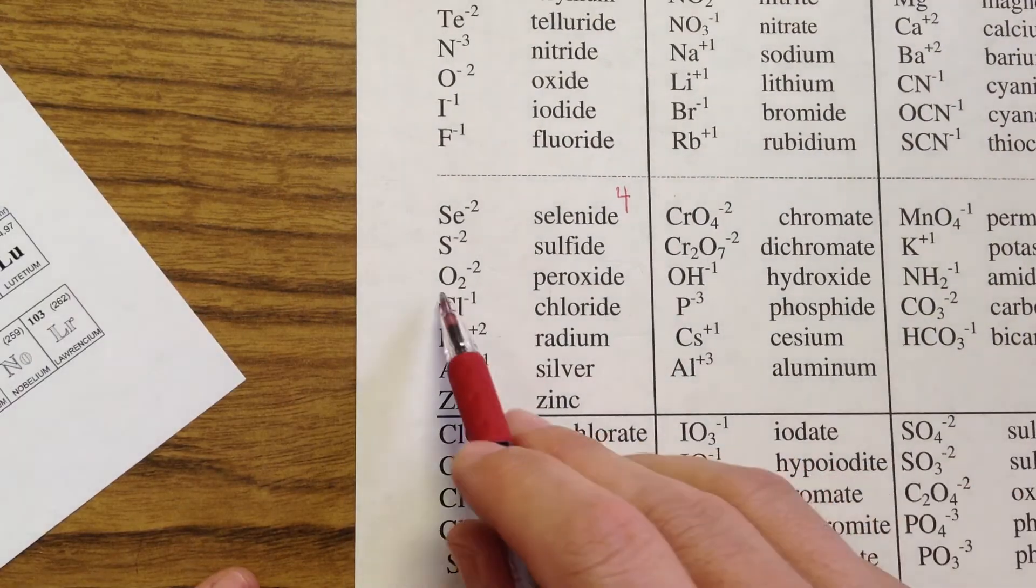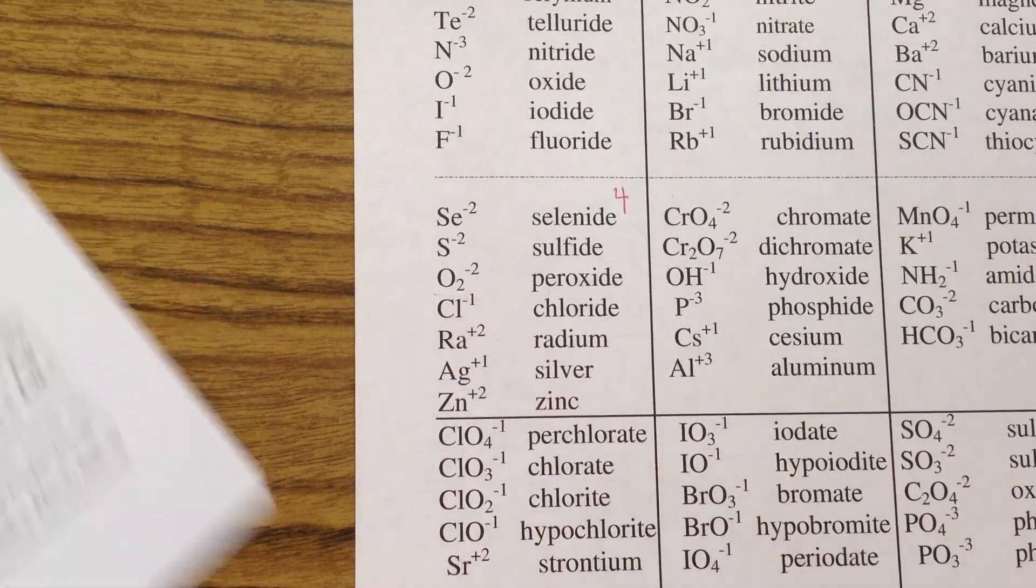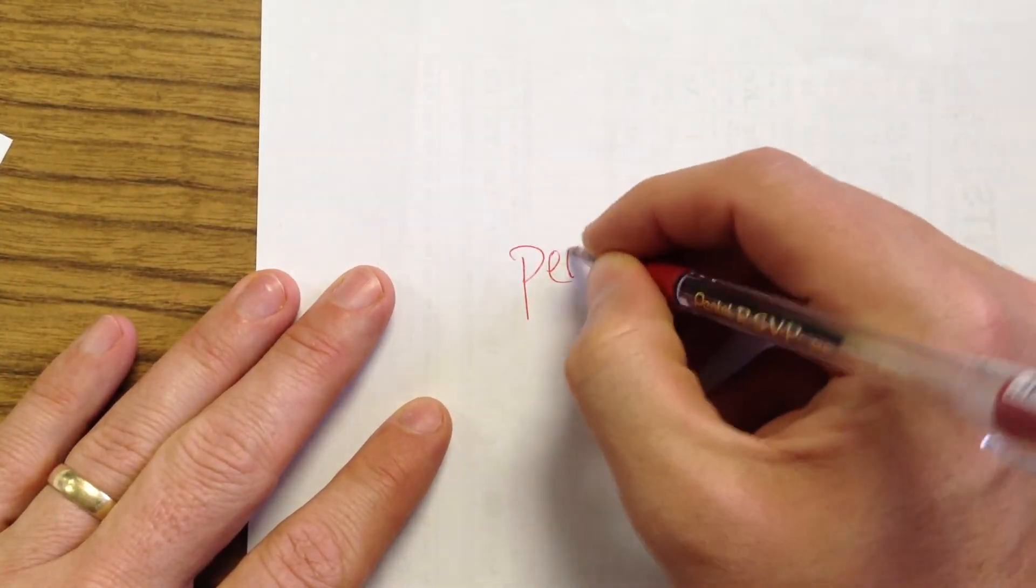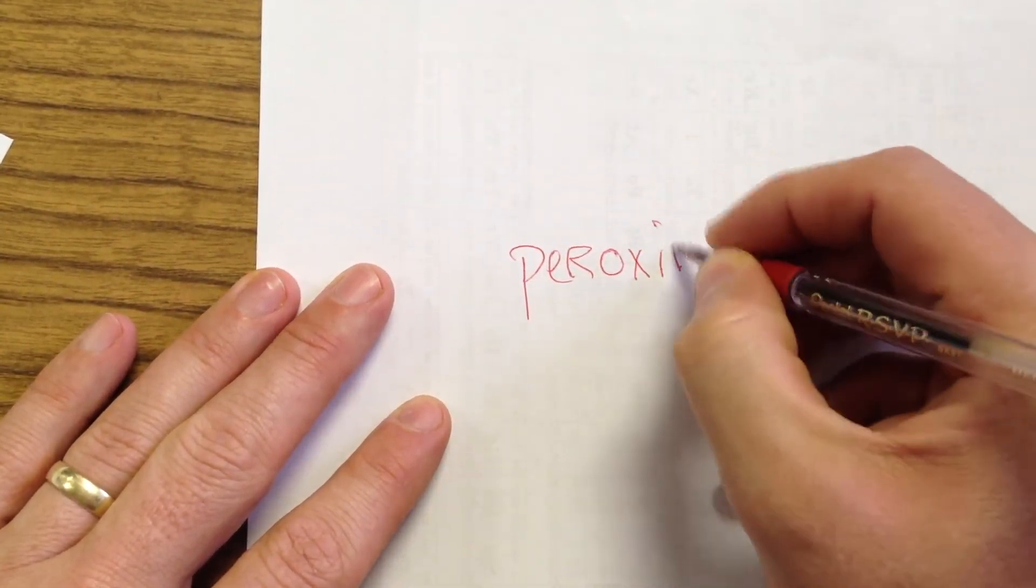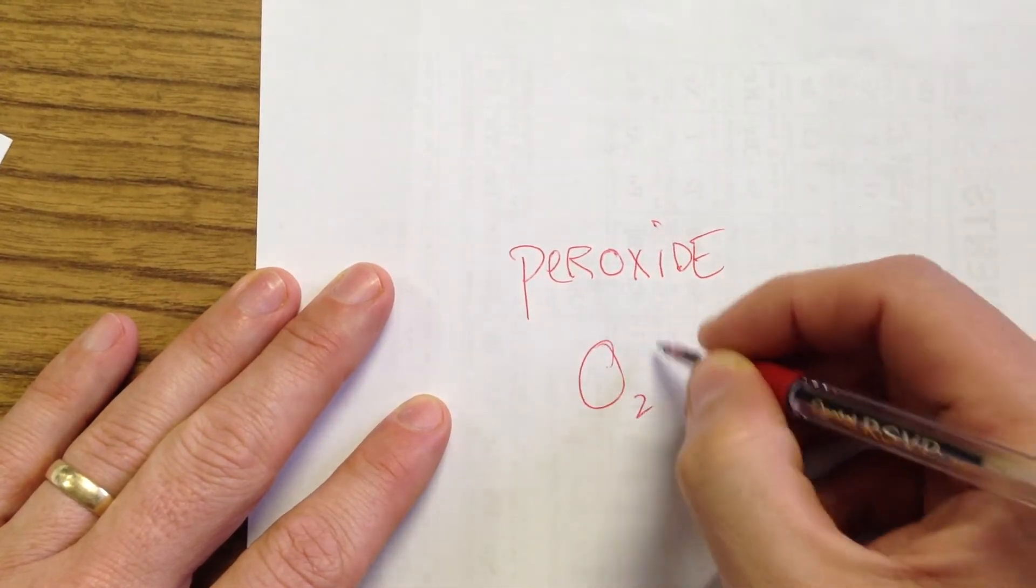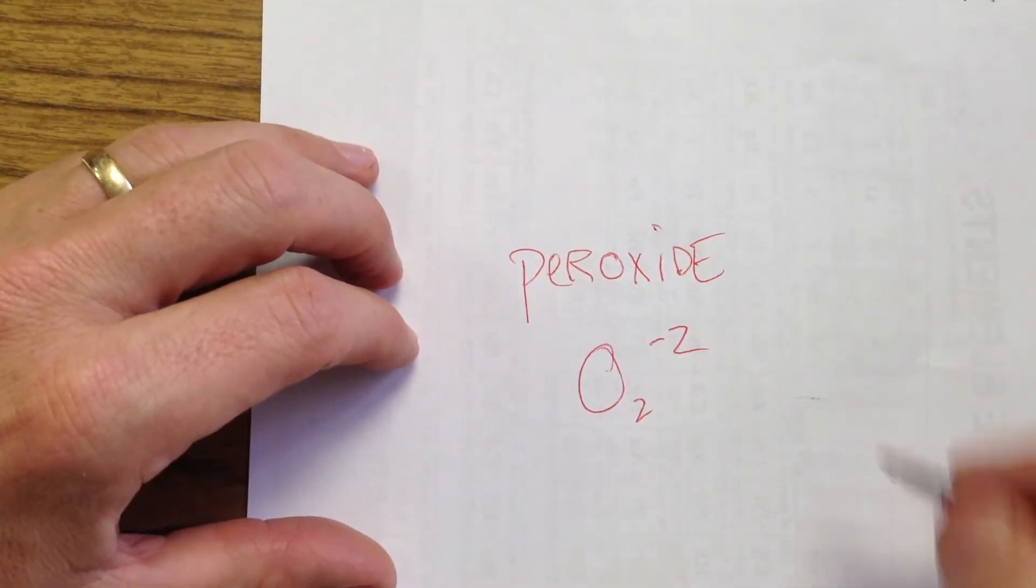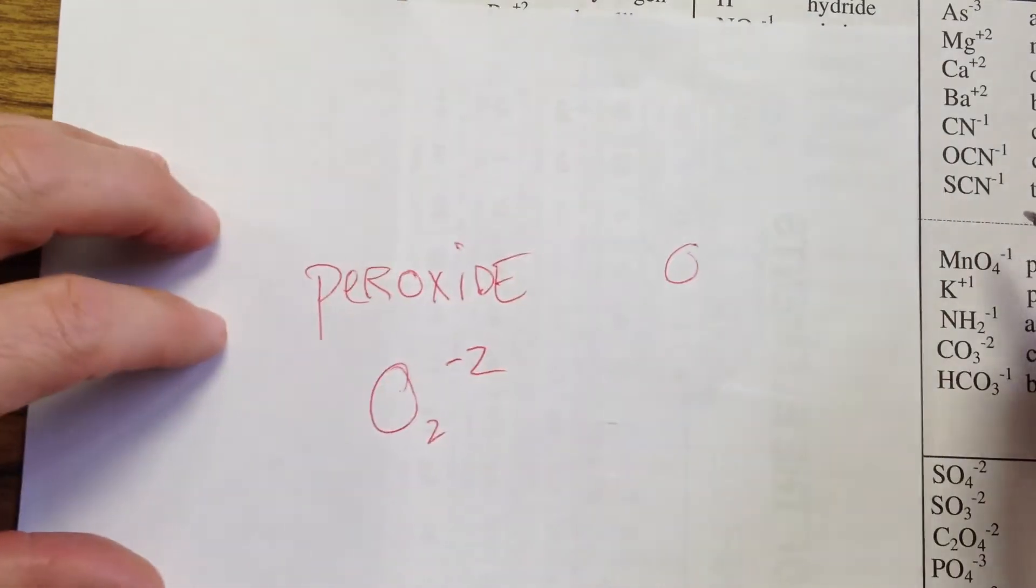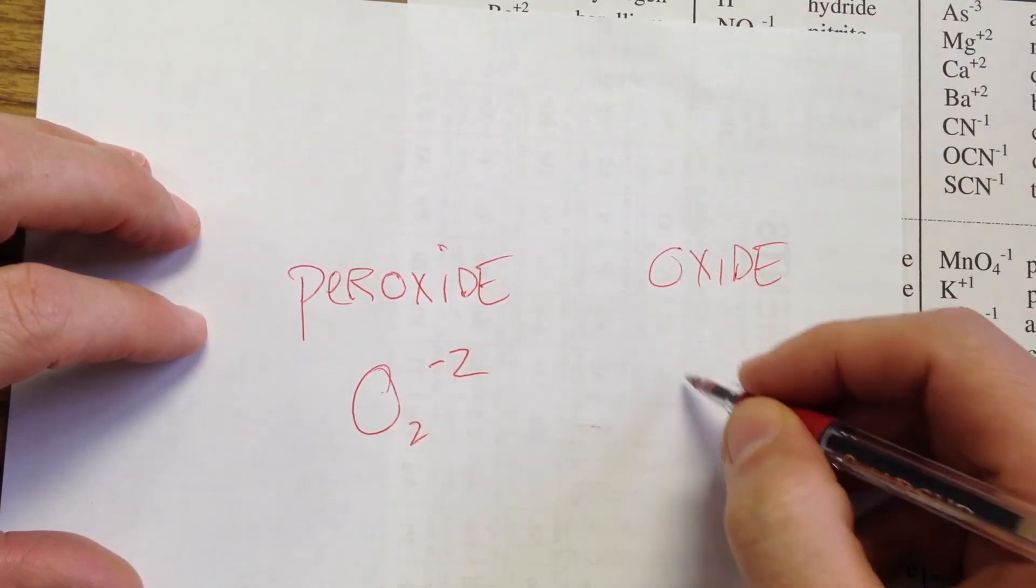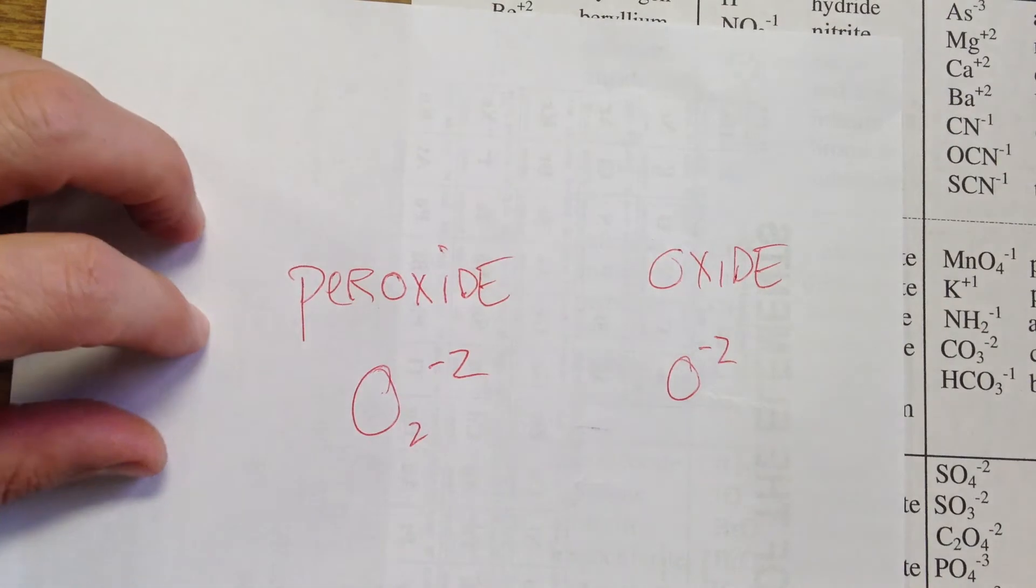The other new one I would like to introduce you to is peroxide. Peroxide is O2 negative two. It looks a lot like oxide. Oxide is O negative two, and so people confuse those a little bit.